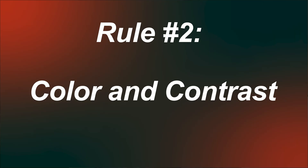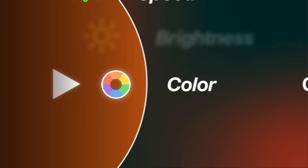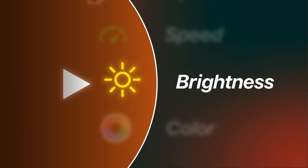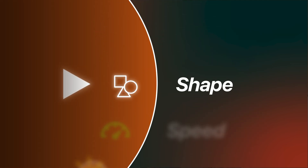Rule number two is color and contrast. Contrast is just a fancy word for difference — that could be the difference of color, brightness, speed, or even shape. For example, if everything on screen is gray and you add one yellow circle, your eye goes straight to the yellow circle. That's contrast at work.